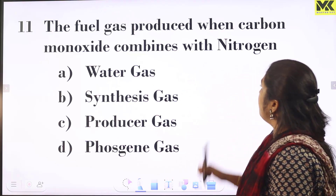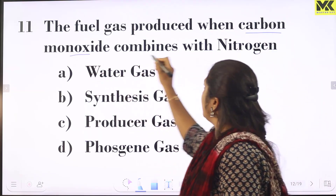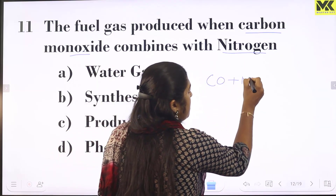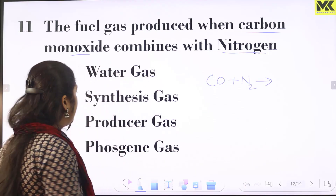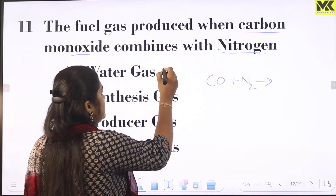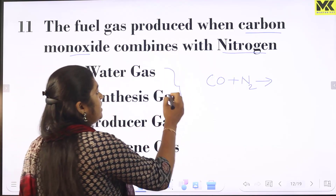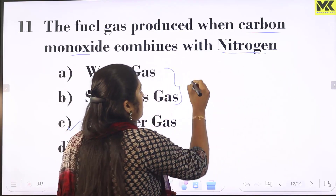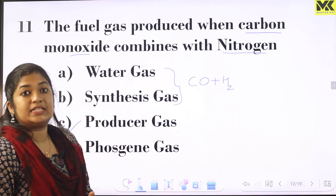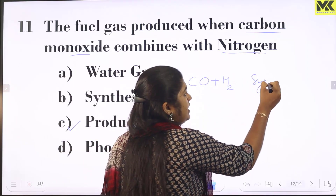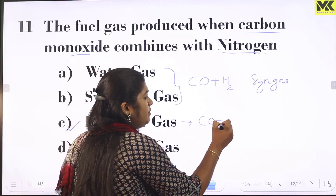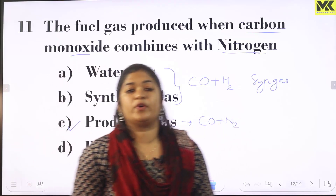The fuel gas produced when carbon monoxide combines with nitrogen is called producer gas. Carbon monoxide combined with nitrogen gives producer gas.